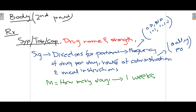For the route of administration, we can write it in two forms: either the drug is taken orally by mouth, or we write PO, which also means orally, though for patient understanding it is preferred to write it out in full. Then in Sig the last element is the meal instruction — whether the drug is to be taken before meal or after meal. Lastly, M indicates for how many days the drug is to be taken. This is important so that the patient doesn't have compliance issues or take the drug more than required. We write it as one week so the chemist knows how many medicines to give the patient.